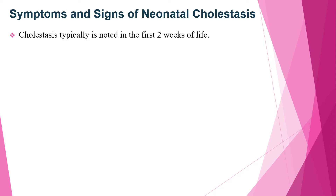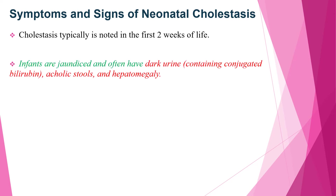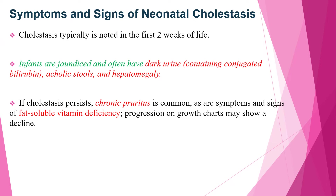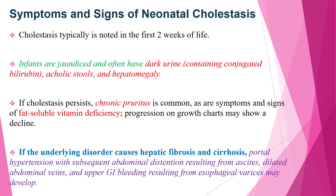When we see symptoms and signs of neonatal cholestasis, cholestasis is typically noted around the first two weeks of life. Infants are jaundiced and often have dark urine containing conjugated bilirubin, acholic stools, and hepatomegaly. If cholestasis persists, it causes chronic pruritus, and fat-soluble vitamin deficiency progresses to growth failure with decline on the growth curve. If the underlying disorder causes hepatic fibrosis and cirrhosis, portal hypertension with abdominal distension from ascites, dilated abdominal veins, and variceal bleeding from esophageal varices might develop.